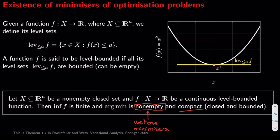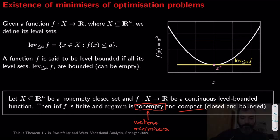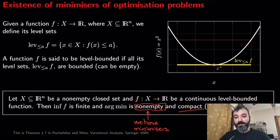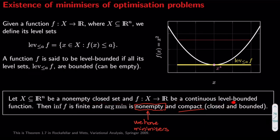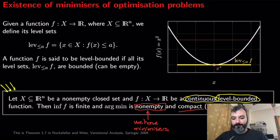Note that this statement doesn't say that if the function is not level bounded then there are no minimizers. You can have functions which are not level bounded but still have minimizers. Also, convexity is not mentioned anywhere — we don't require the function to be convex. We only need two qualifications: the function must be continuous, and the function must be level bounded. If you want to check whether an optimization problem has a minimizer, check these conditions. But again, this part is a little more theoretical and is not examinable.